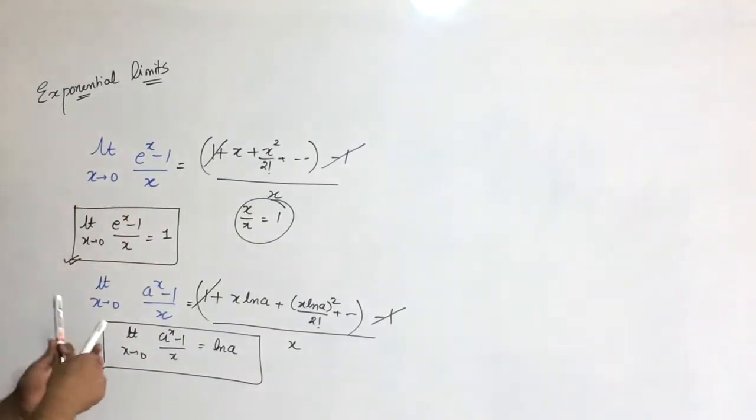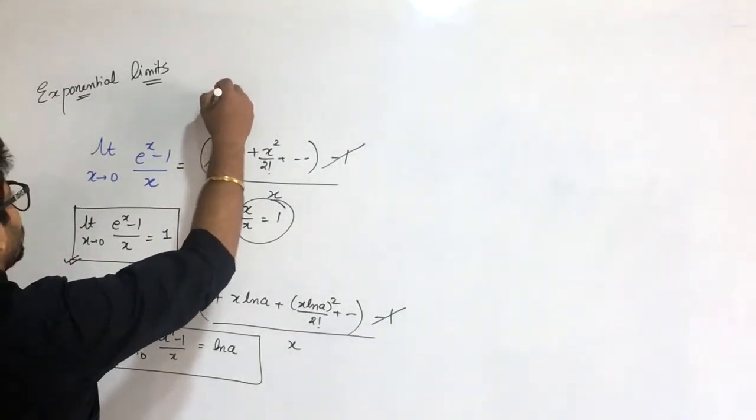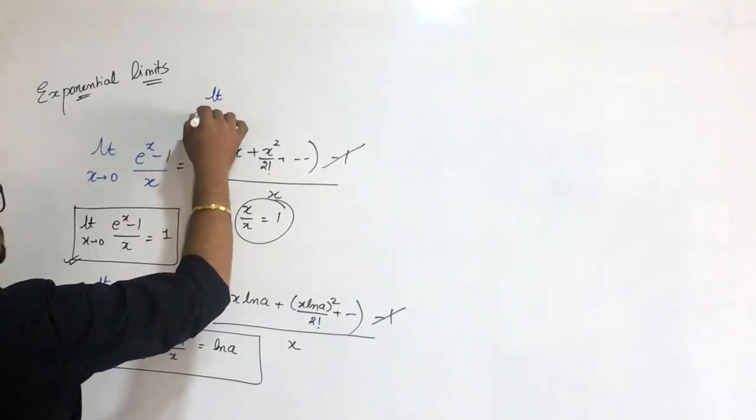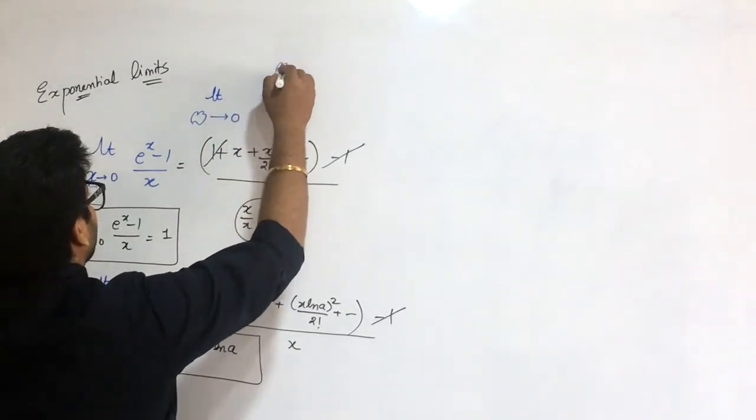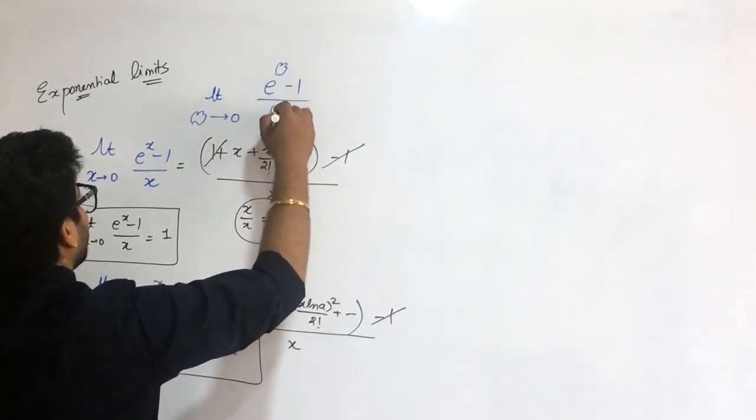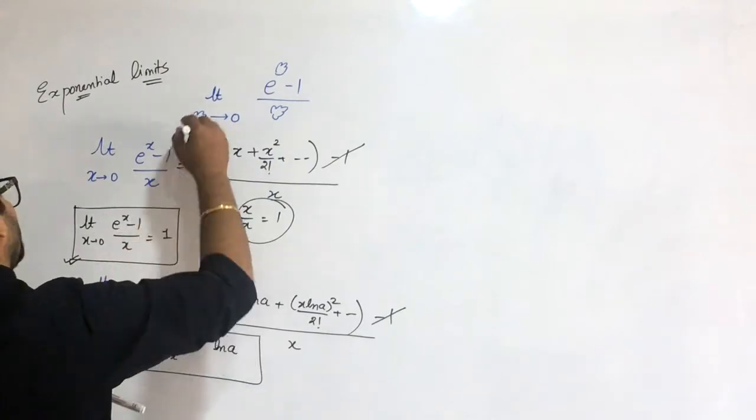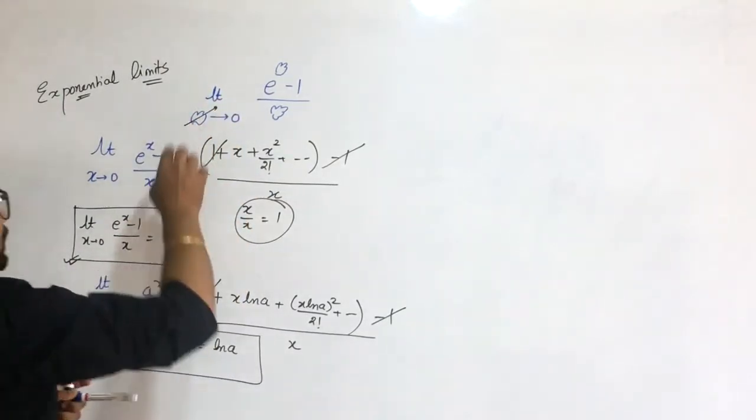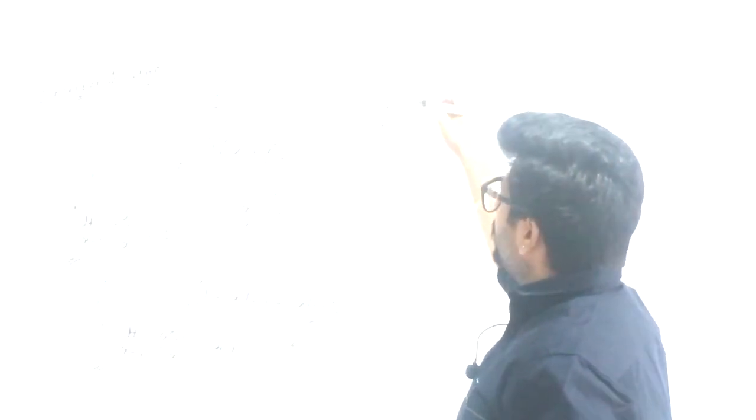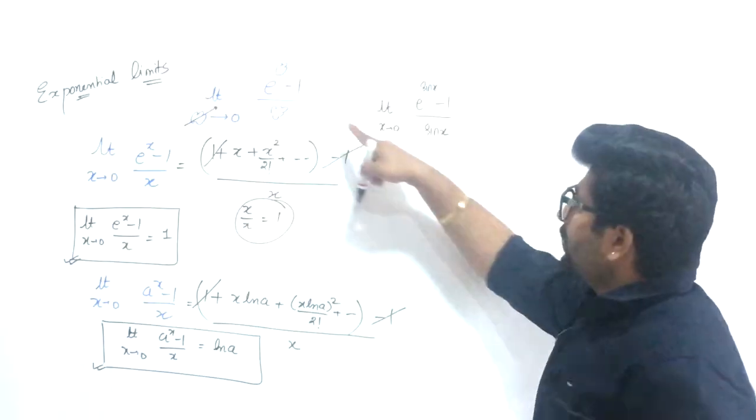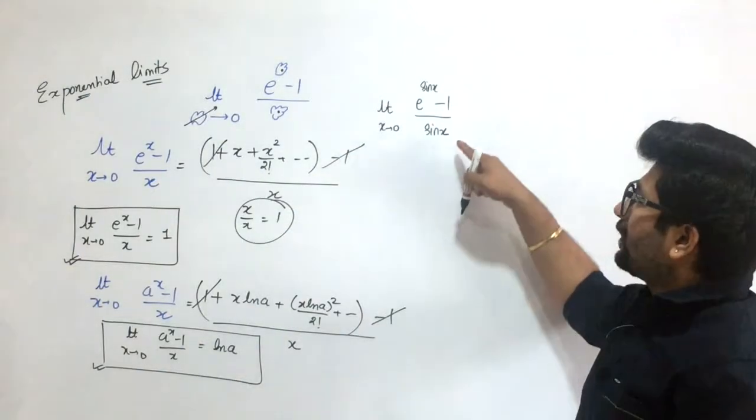Now this is the general case. If you have limit as some story approaches 0 of e raised to power some story minus 1 upon that story - the story on top and bottom need not be the same initially, but e raised to power something minus 1 upon that same thing. For example, limit x approaches 0 of e raised to power sine x minus 1 upon sine x. Since the story that appears in both places is the same and approaches 0, this expression equals 1.